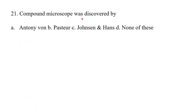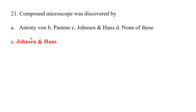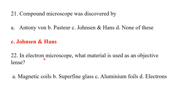The compound microscope was discovered by Janssen and Hans. A compound microscope has two different types of lenses. In an electron microscope, what material is used as an objective lens? A magnetic coil is used as the objective lens.